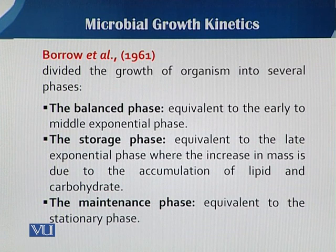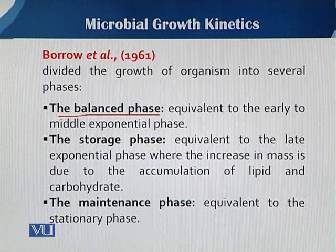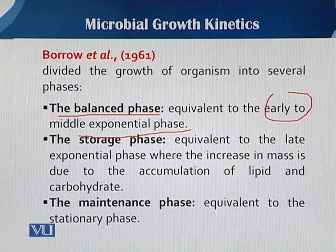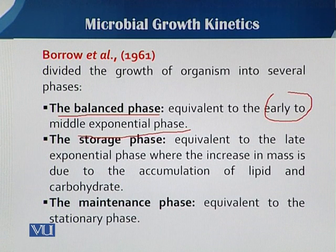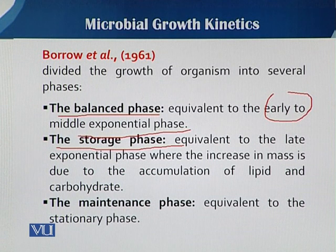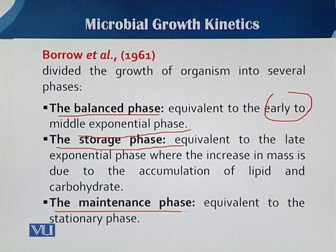As you can see in this slide, Baro et al. first discussed the balanced phase, which is equivalent to the early and middle exponential phase — the early and middle log phase — of the 4 previously discussed phases: lag, log, stationary, and decline. The second phase is called the storage phase, equivalent to the late exponential phase, where the increase in mass is due to the accumulation of lipids and carbohydrates inside the cell. The third stage is the maintenance phase, which is equivalent to the stationary phase.